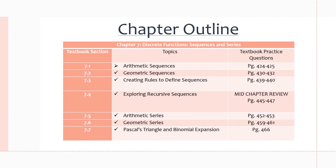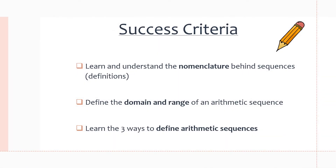Here's the chapter outline for chapter 7, and you can find extra practice questions after we go over arithmetic sequences on pages 424 to 425. Here's the success criteria for this lesson. Firstly, we want to learn and understand the nomenclature behind sequences. Then we want to define the domain and range of an arithmetic sequence, which is the same for most of them, at least for the domain — the range changes, but the domain usually stays the same. And then lastly, we want to learn the three ways to define arithmetic sequences.